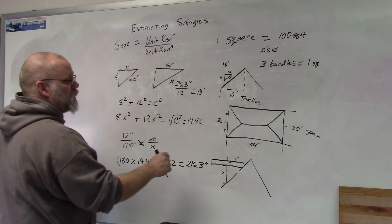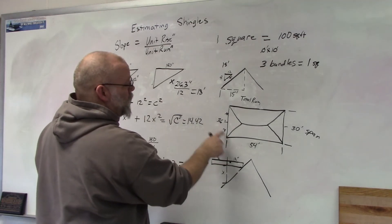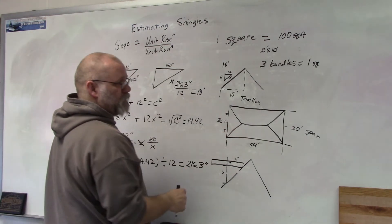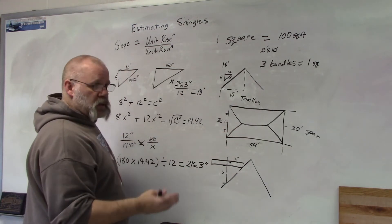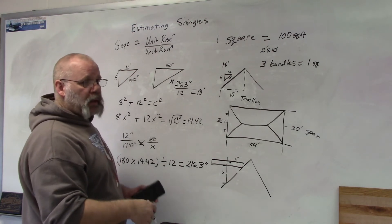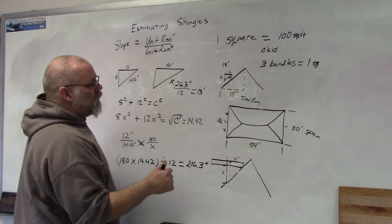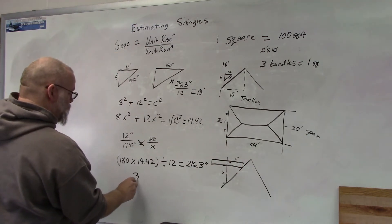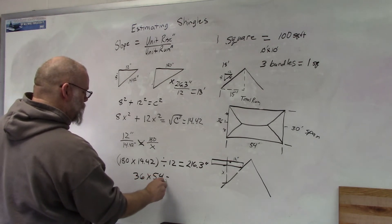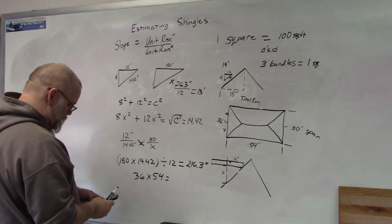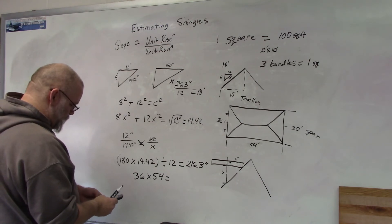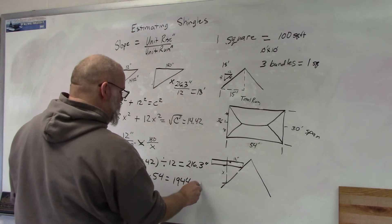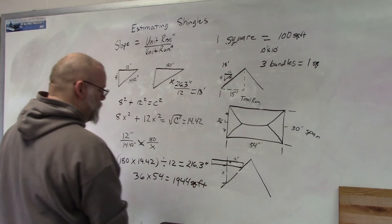Now all I have to do is multiply this times this. Now you're saying, well, this is a hip roof, won't that make any difference? Well, we're estimating, so it doesn't have to be exact. We're going to add a little bit of extra so that we have enough. All we have to do is take 36 times 54, which equals 1,944 square feet. That's the area of my roof.